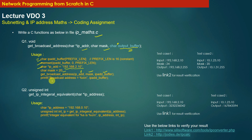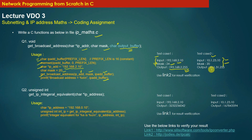When this function returns, you should print the broadcast address returned in the output buffer. For test case 1, the input is 192.168.2.10 with mask 24, and the expected broadcast address is 192.168.2.255. For test case 2, the expected broadcast address should be 10.1.31.255. You can use link 2 for result verification.